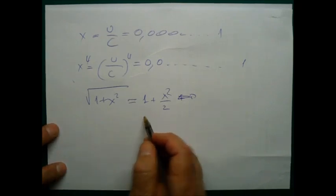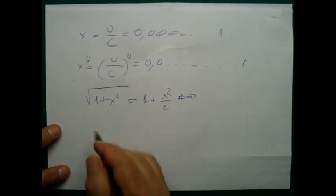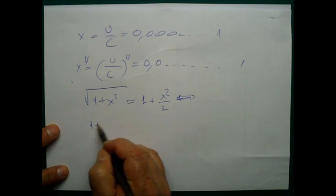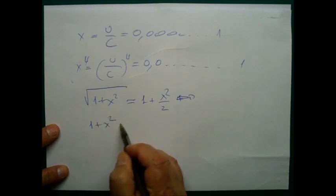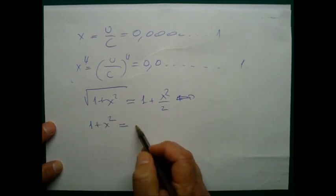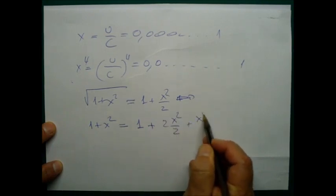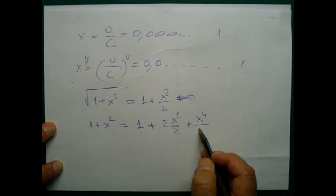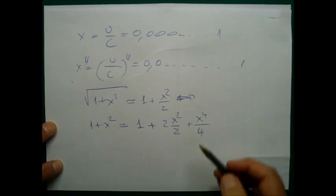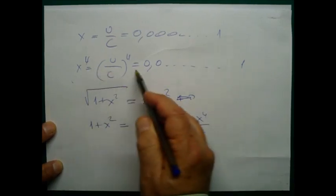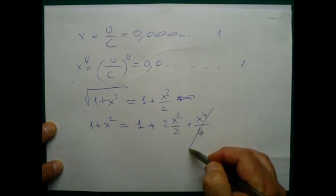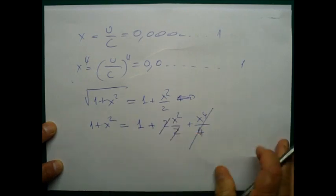Now let's start to prove it. If I raise to the power of 2 both sides of this equation, I get 1 plus X squared equals 1 plus 2 X squared over 2 plus X to the 4th power over 4. This is extremely small, so I can neglect it, and that gives our proof.